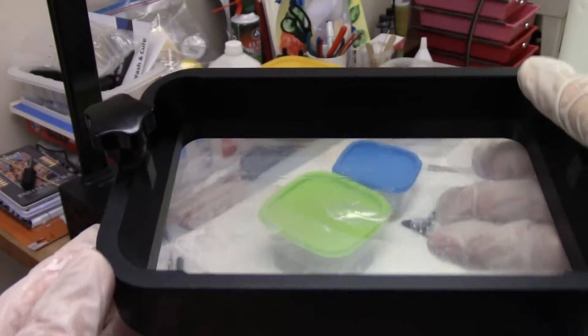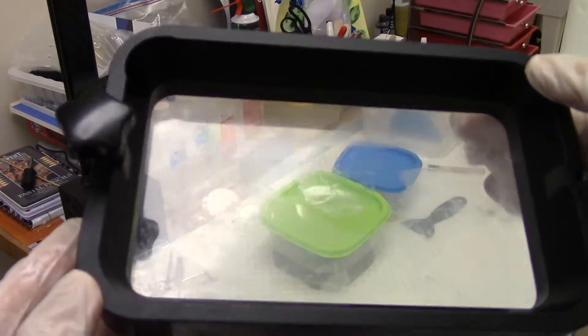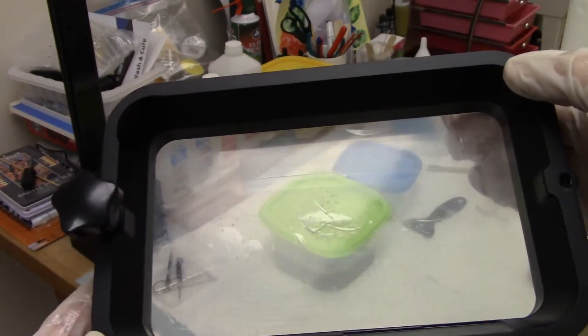And after cleaning the vat, I see that there's a bubble in the FEP, and I mean, this is a real bubble. If you push on it with your finger, it will move around a little bit in the bottom of the vat.